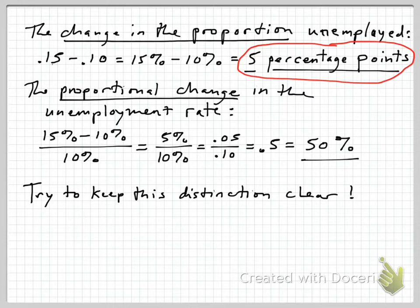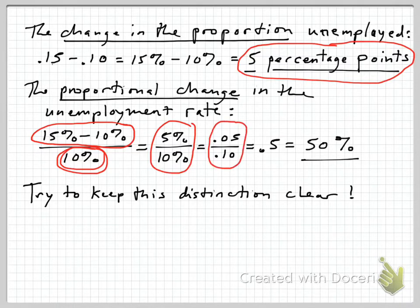Now, the proportional change is of course something very different, because here we've gone from 10% to 15% working on a base of originally 10%. So, as you might have learned somewhere in elementary school, to find the percentage change or the proportional change, we're going to take the actual change, the after minus the before, 15% minus 10%, divide it by the base that we started at, 10%.